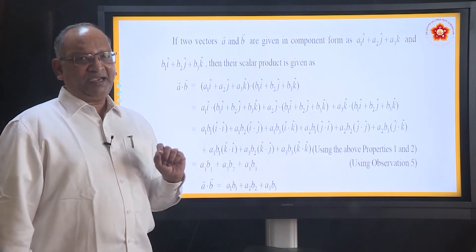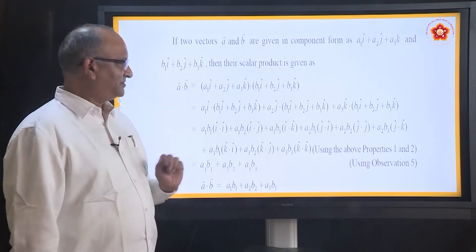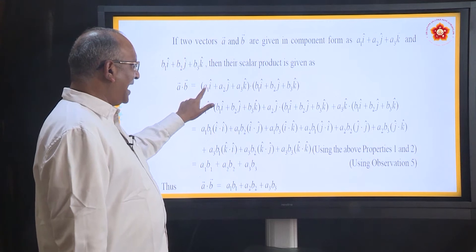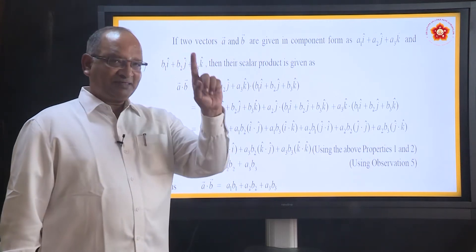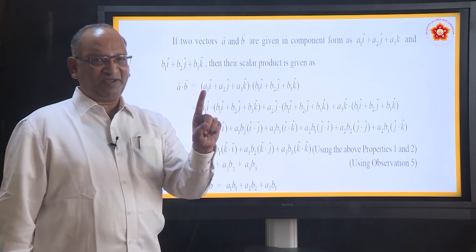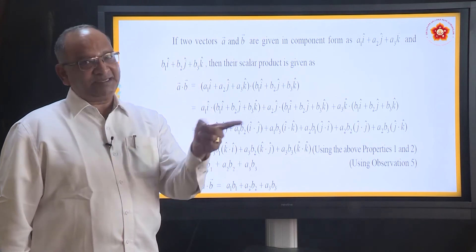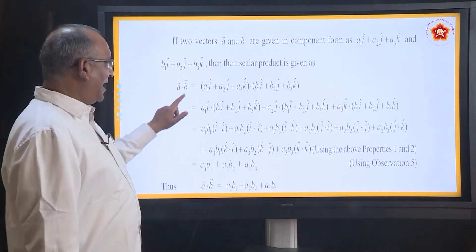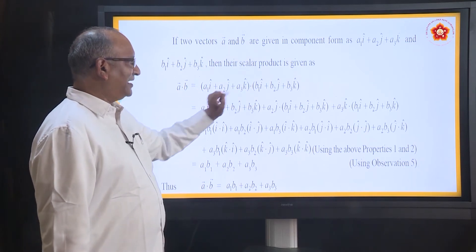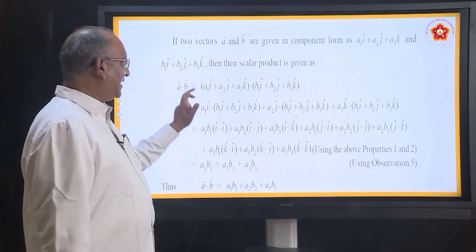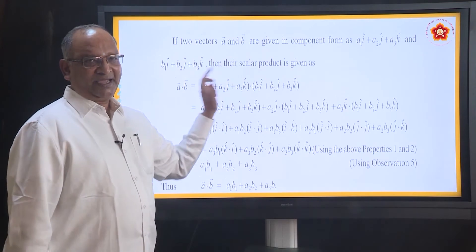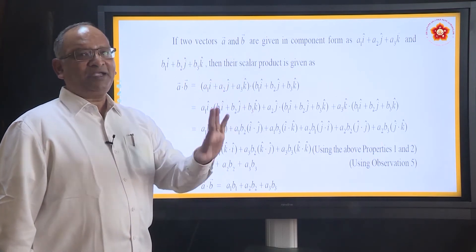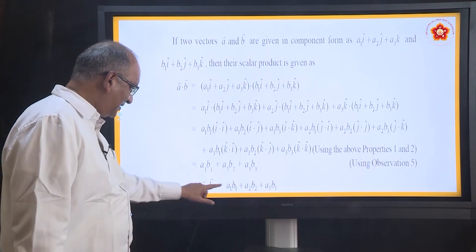When you do that, use your common sense. We know that when we multiply I with I the answer is 1, I dot I is 1. I dot J and I dot K become zero. So A1I multiplied by B1I gives A1B1 times I dot I. I dot I is 1. So what do you get? A1B1. That is the result. The other two terms will become zero.